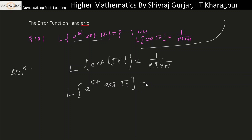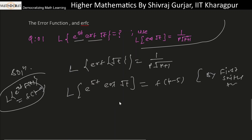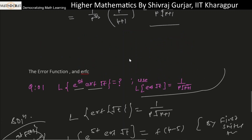By the first shifting theorem, we know that the Laplace transform of e to the power at times f(t) equals the capital F of p minus a. Using this shifting property, related results can be derived directly from the result we just established.